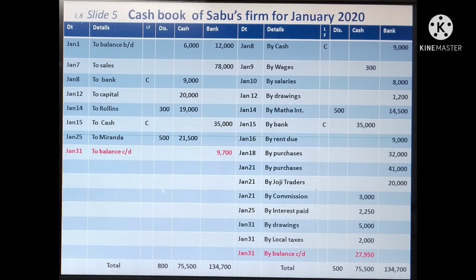Looking at the debit side of the Cash Book: January 1, 'To Balance Brought Down' — Cash Column 6,000, Bank Column 12,000. This is the opening balance brought from the previous period; no posting is required for this. January 2, Sales in Bank Column 78,000 — in Sales Account, post on the credit side 'By Bank 78,000.' The next entry has a C mark — it is a contra entry, so no posting in the Ledger Book.